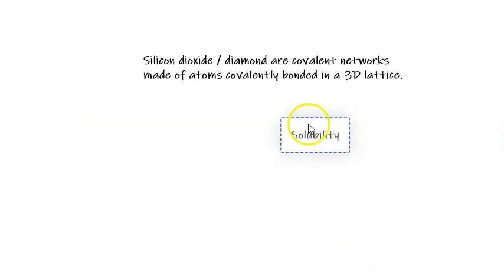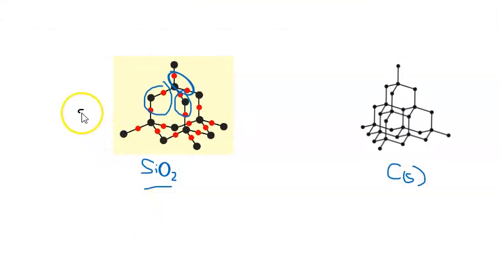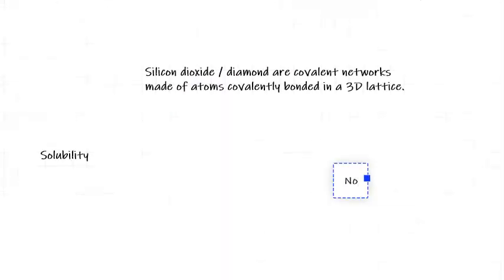Covalent networks are not soluble and this is because if we look back up at the diagram, if we were to have water molecules around these covalent networks, even though this is a polar molecule, the attraction between the oxygen or the hydrogen and the atoms in the covalent network are not strong enough to overcome the bonds within the network. The attraction between the polar water molecules and the atoms that make up the covalent network are not strong enough to break the bond within the covalent network. So 3D covalent networks are not soluble. Solubility: no.